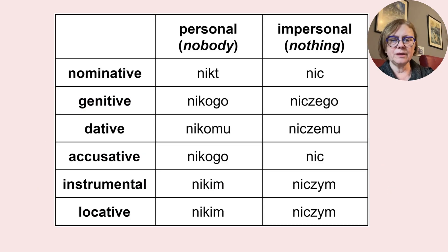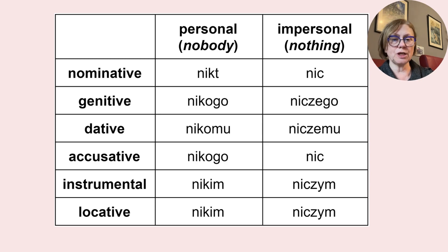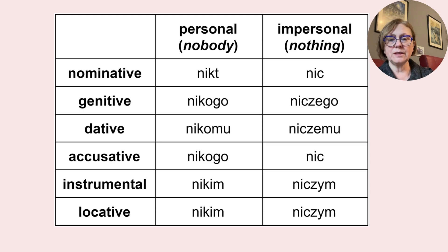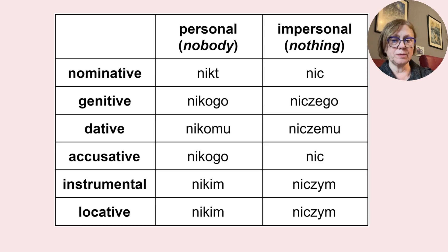Nominative: Nikt, Nic. Genitive: Nikogo, Niczego. Dative: Nikomu, Niczemu. Accusative: Nikogo, Nic. Instrumental: Nikim, Niczym. Locative: Nikim, Niczym.